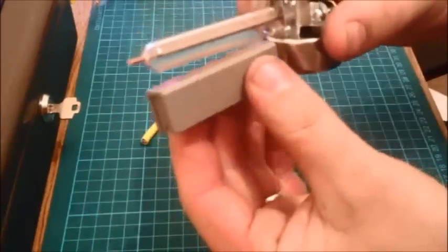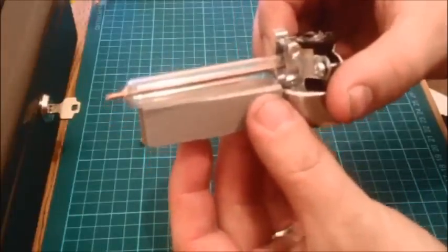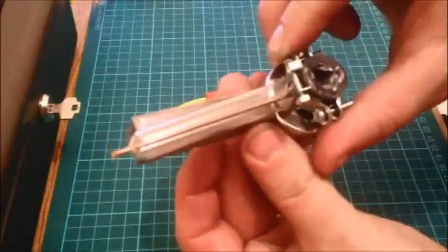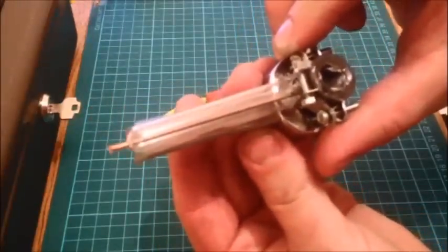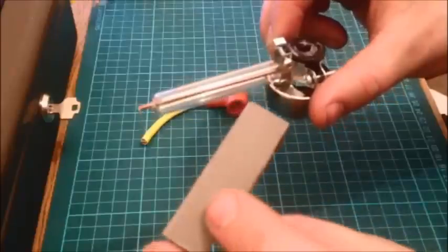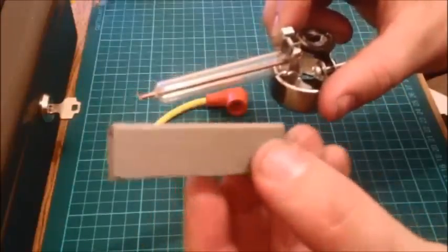And that just sits nicely underneath there. So when that's against the base, it stops all the light from escaping from the sides so the light shines straight up. And I painted the sides as well to block out so the light doesn't go out of the sides.